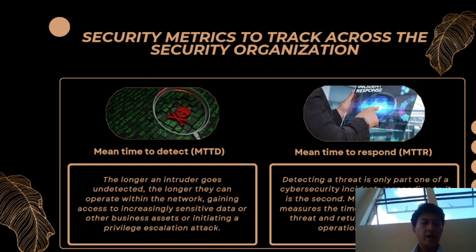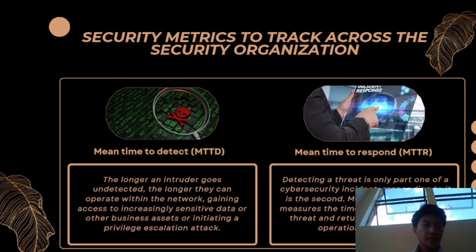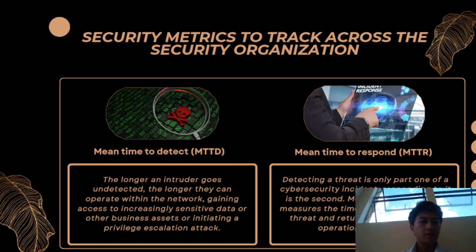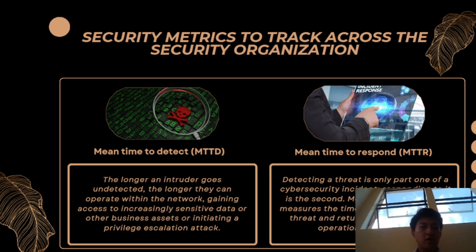Let's proceed by identifying key security metrics that organizations should track. First is Mean Time to Detect, or MTTD. This metric measures the time it takes for an organization to detect a data breach or security incident — the faster a breach is detected, the lower the potential risk and damage. Next is Mean Time to Respond, or MTTR. Unlike MTTD which focuses on detection, MTTR measures the time it takes to respond and mitigate a breach once it has occurred. A shorter MTTR indicates a more effective incident response process.